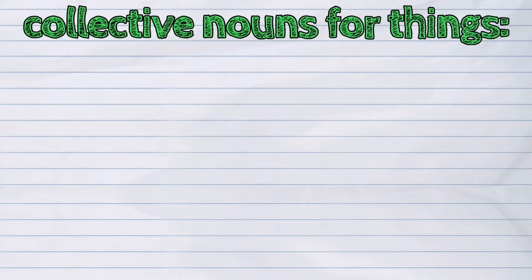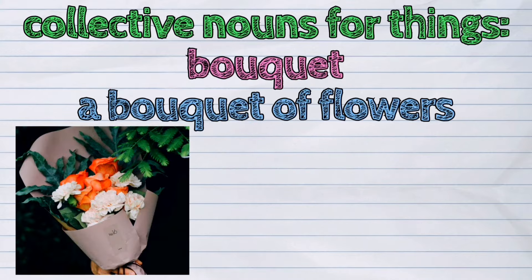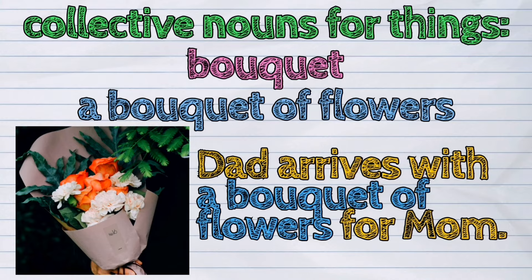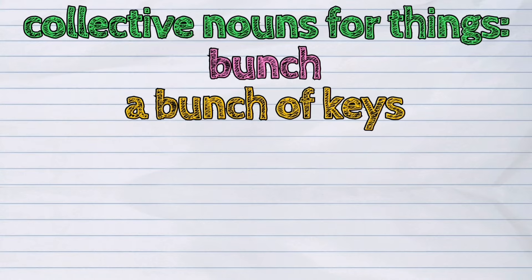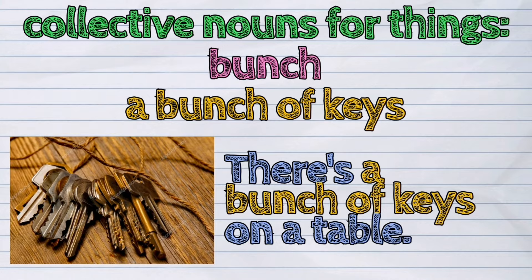For things, the collective nouns are also followed by the word 'of' and a noun telling who or what belongs in that group. Examples: Bouquet — a bouquet of flowers. Dad arrives with a bouquet of flowers for mom. Bunch — a bunch of keys. There's a bunch of keys on a table.